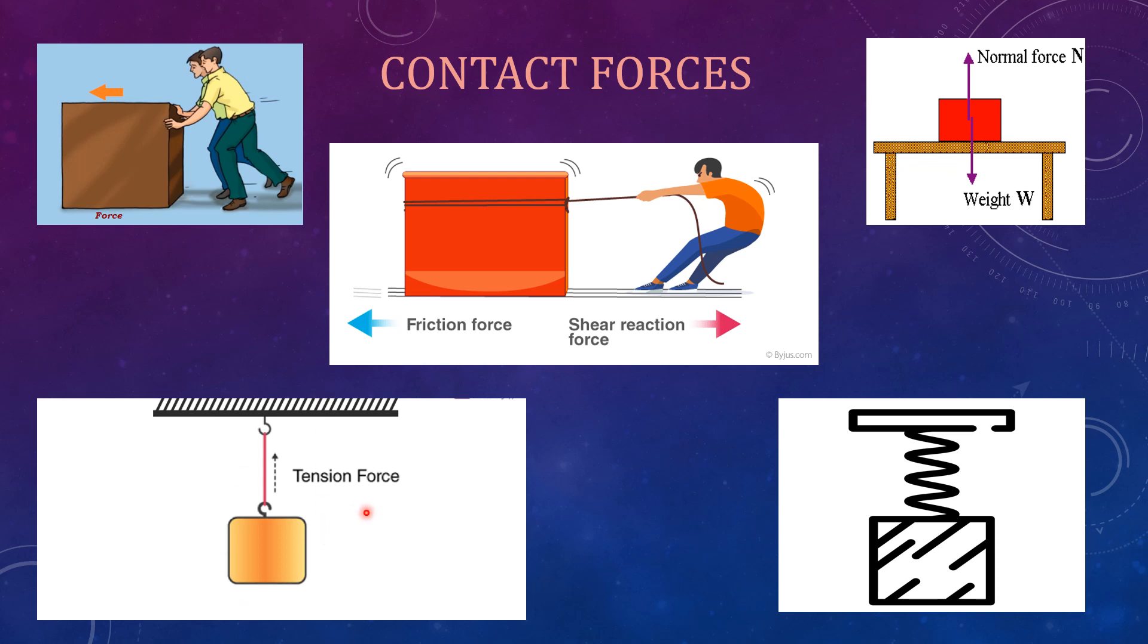This is the example of tension force. It is a force transmitted through a strong rope or cable wire when it is tightly pulled by. In this case, the object is tied with the string and here the tension is created.